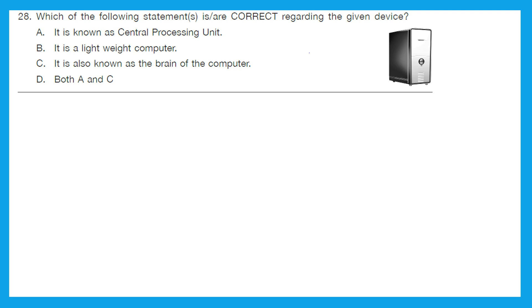Question 28: Which of the following statements are correct regarding the given device? It is known as central processing unit. It is a lightweight computer. It is also known as the brain of the computer or both A and C. So this is a CPU case. And option A is definitely correct. And CPU is also called the brain of the computer. So option C is also correct. And we have option D which says that both A and C is correct. So for us the right answer would be option D.